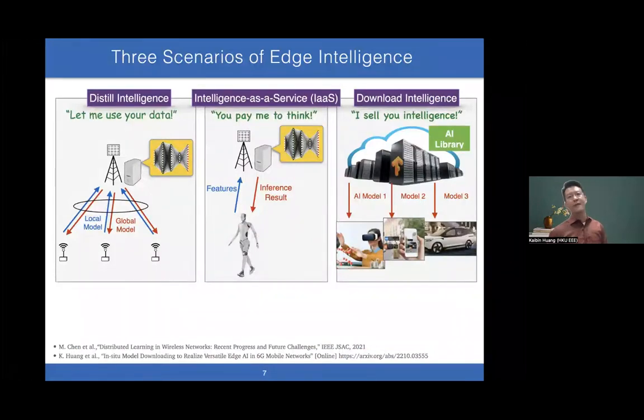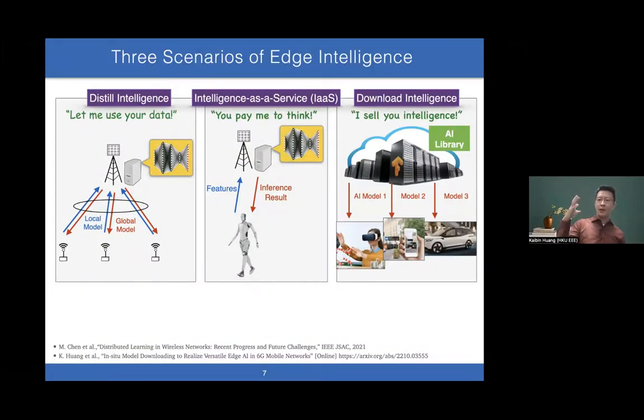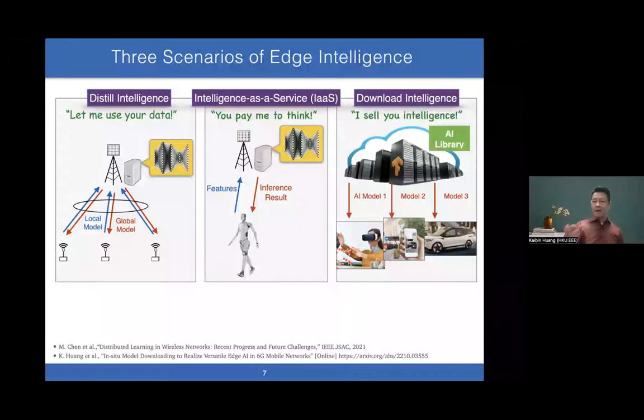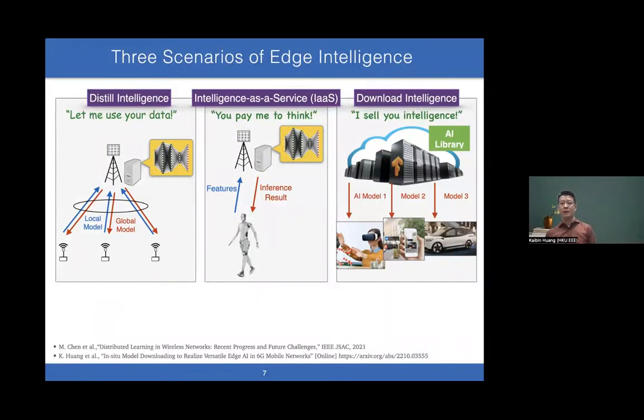Edge intelligence—let's be more concrete. How will 6G networks support edge intelligence? Basically three scenarios. First is distilled intelligence. You want to use distributed mobile data to train global AI models using techniques like federated learning while preserving data privacy.